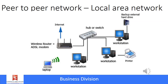Here you see an illustration of a network, and we have several computers that are connected to each other via hub. You can see that they all share an external hard drive, and they also share a common printer. This is actually an example of a local area network, or a LAN, and a LAN exists in a limited area — for instance, within the same building, or perhaps the same campus.